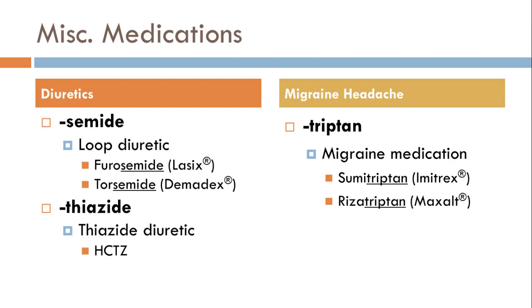For migraine headaches, you'll hear about triptans. I have Imitrex, whose generic name is sumatriptan, and Maxalt, whose generic name is rizatriptan. These are great for migraines and work really well. On an exam, if asked which medication is used for migraines, look for the drug ending in '-triptan' — sumatriptan, rizatriptan, anything ending in '-triptan' is a migraine medication.